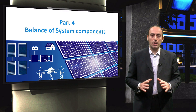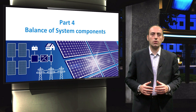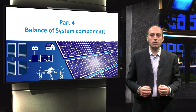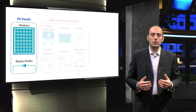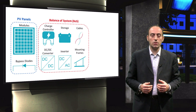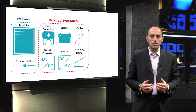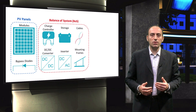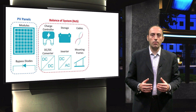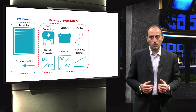Solar modules alone are not enough to make a PV system, of course. In part 4 of the course, we will look at all the balance of system components required to design a PV system. We will discuss in detail the operation of DC to DC converters, DC to AC inverters, energy storage units like batteries, charge controllers, and even the cables and mounting frames. You will also learn about maximum power point tracking logic that is usually contained in one of the balance of system components.